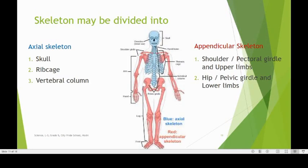The skeletal system may be divided into two parts: the axial skeleton and the appendicular skeleton. The parts which lie along the central axis of the skeleton and are not found in pairs make the axial skeleton. The parts which are seen in pairs and are attached to the backbone on either side are called the appendicular skeleton.